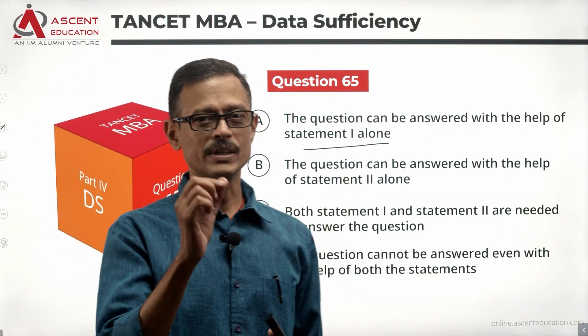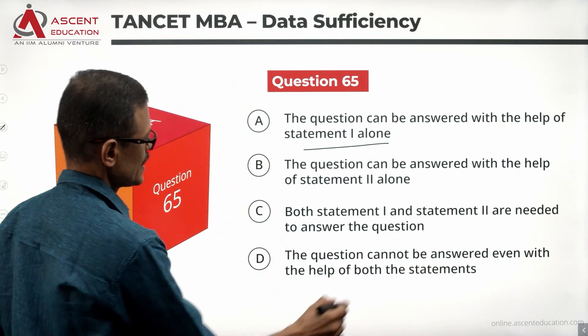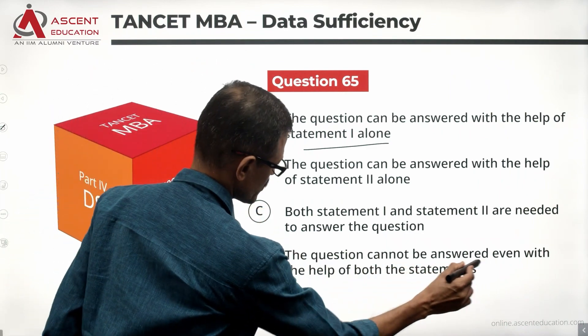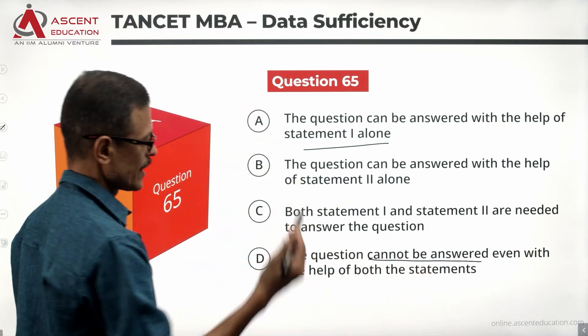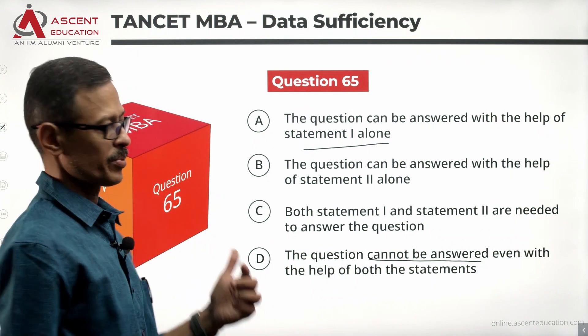If statements 1 and 2 together are sufficient, the answer option is C. If the given data is not sufficient and it cannot be answered, the answer option is D.